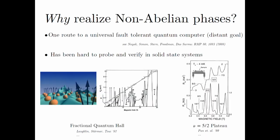Why do we want to realize non-abelian phases? At zeroth order, it's cool — it hasn't been realized before. At infinite order, it is one route to perform universal fault-tolerant quantum computation. But from a condensed matter perspective, it's already been very hard to probe and verify non-abelian anyons in actual solid-state systems. Since the discovery of the first topological phase — the fractional quantum Hall effect 40 years ago — we have candidates like the nu=5/2 fractional quantum Hall state from 20 years ago, but still no decisive evidence that non-abelian anyons exist.